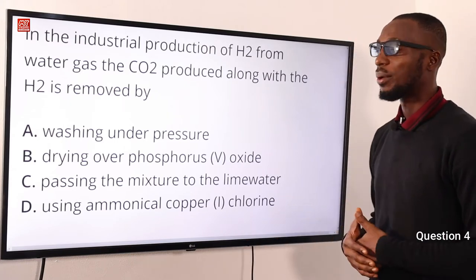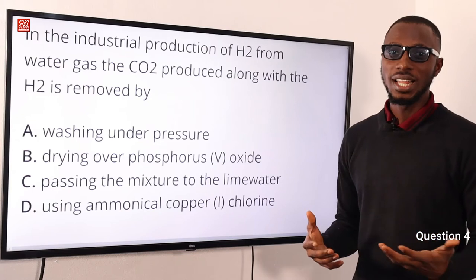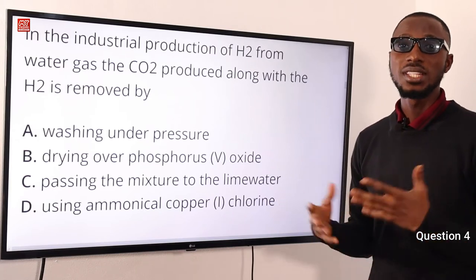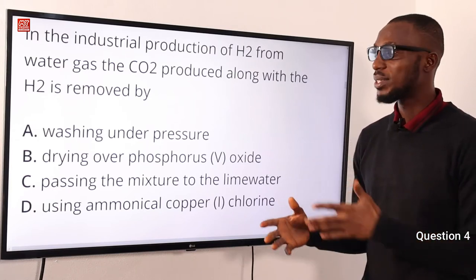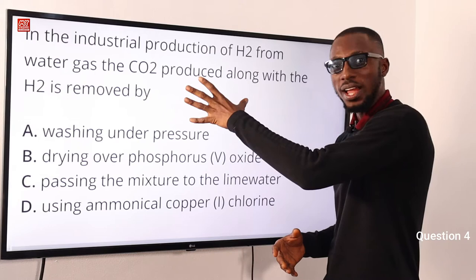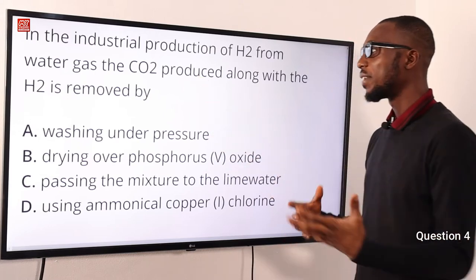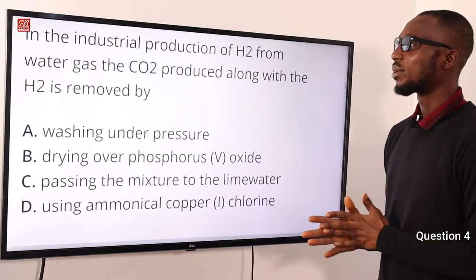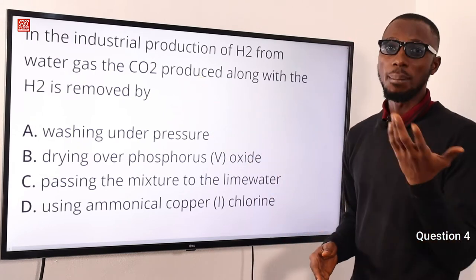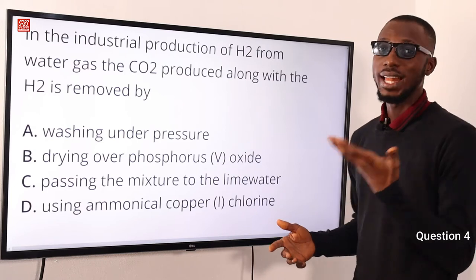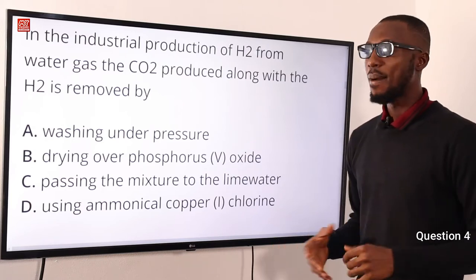Talking about the industrial preparation of hydrogen gas, you can use the water gas — that is the Bosch process, which is briefly described here. You can also use methane, and you can also use the electrolytic method.